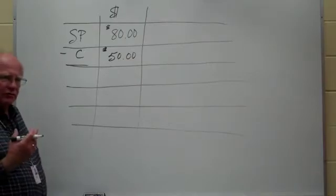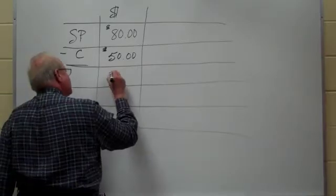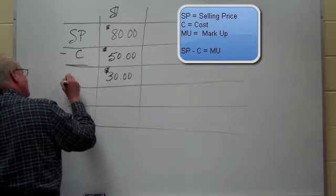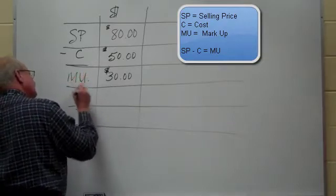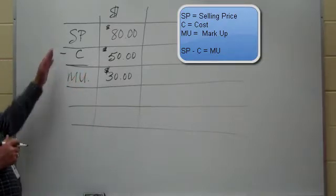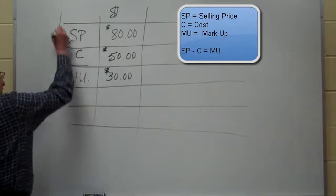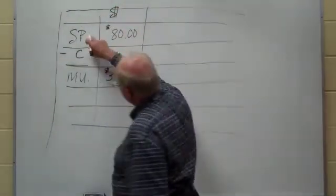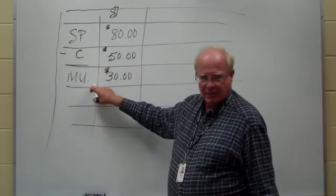And we get $30 left over of something. So we get $30 and that is called markup. So selling price minus cost then is markup. That's the relationship that's existing there. So selling price minus cost gives us markup.